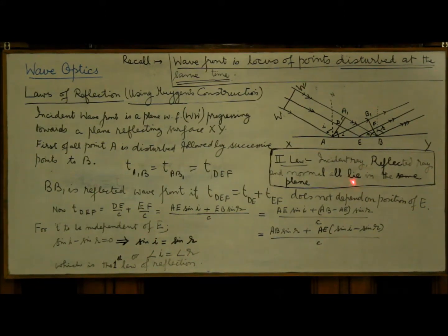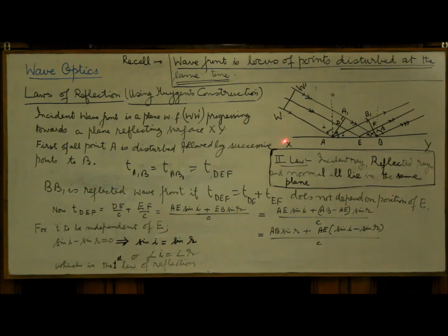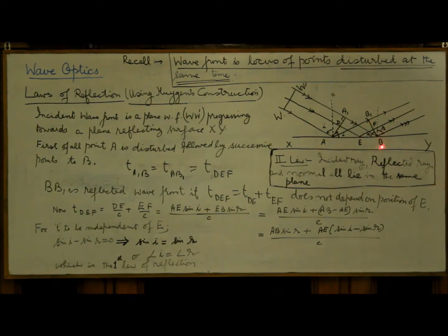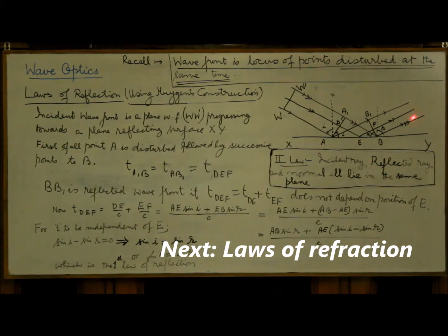The second law — that the incident ray, reflected ray, and normal all lie in the same plane — has a theoretical proof we can understand by looking at the diagram. WW' is a plane wavefront normal to the plane of the board. XY is a reflecting surface like a plane mirror, also perpendicular to the plane of the board. BB1 is a reflected wavefront, also normal to the plane of the board. So the incident ray perpendicular to WW' lies in the plane of the board, the normal AN perpendicular to XY lies in the plane of the board, and the reflected rays perpendicular to BB1 also lie in the plane of the board. Hence the incident ray, reflected ray, and normal all lie in the same plane.